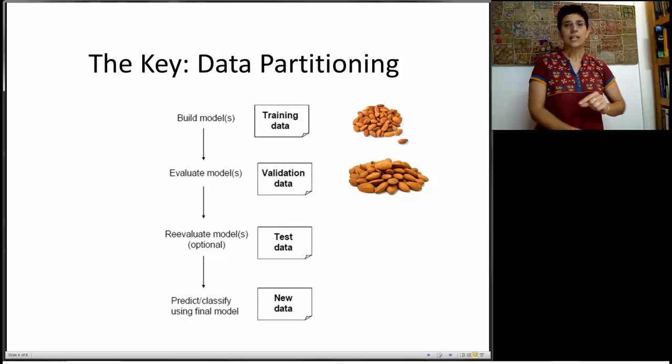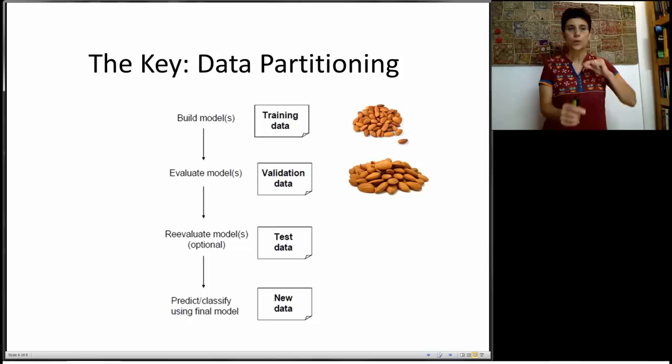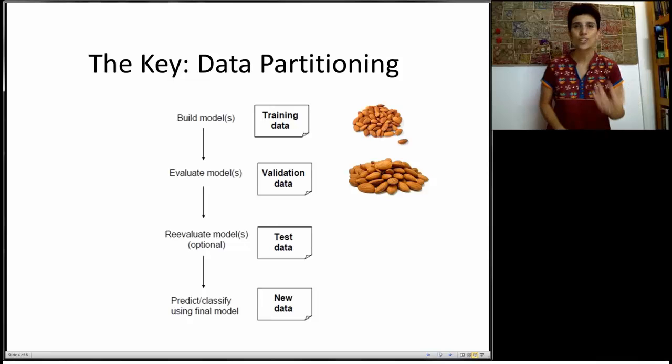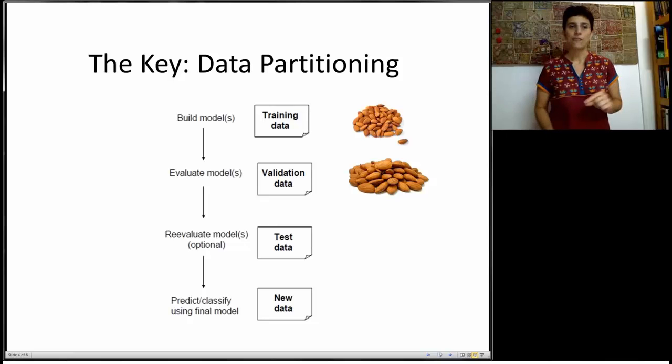The validation data is going to help us when we go and tweak our models or compare different models, and be able to look at how they operate on new data. Because when we actually use the training data to learn, our model is biased towards the training data. It knows the training data much better than it will know new data. That's the reason that we also have validation data.